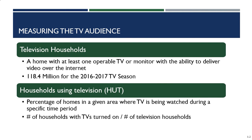The second measurement is the HUT, or the number of households using their television. This measures the percentage of homes in a given area where TV is being watched during a specific time period. National advertisers look at the percentage of U.S. homes with TV being watched, but we can get as narrow as a specific city or neighborhood. The calculation is: number of households with the TV turned on divided by the number of television households. Our denominator is 118.4 million. In our course, the number of households with TVs turned on will always be given to you.